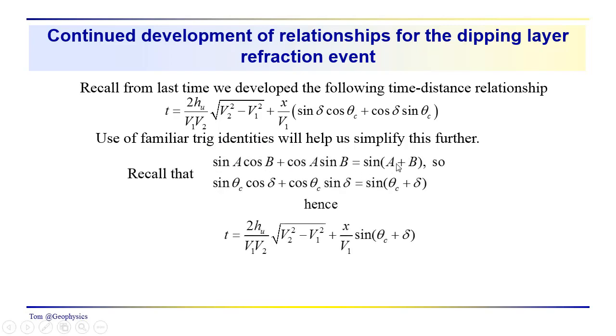And I think we asked you to simplify this a little bit further. In doing that, we could use the identities for the sine of A plus B. In this case, sine of theta critical plus delta. Working backwards, we know that sine theta critical cosine delta plus cosine theta critical sine delta is equal to the sine of theta critical plus delta. And that's basically what we have up here.